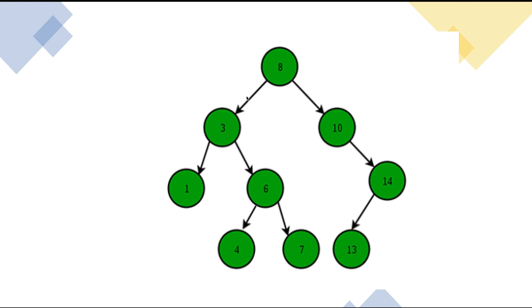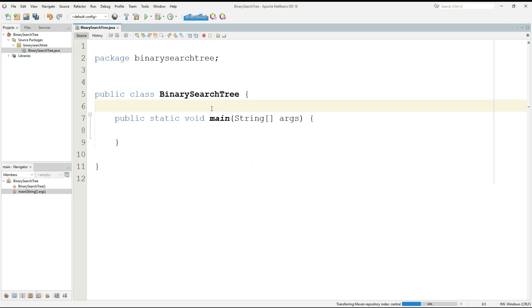A binary search tree is a type of data structure that stores data in a tree-like format, where each node has at most two children, which are referred to as the left and right child. The key property of a BST is that the value of each node in the left subtree is less than the value of the parent node, and the value of each node in the right subtree is greater than the value of the parent node. This property allows for efficient searching, insertion, and deletion of data in the tree.